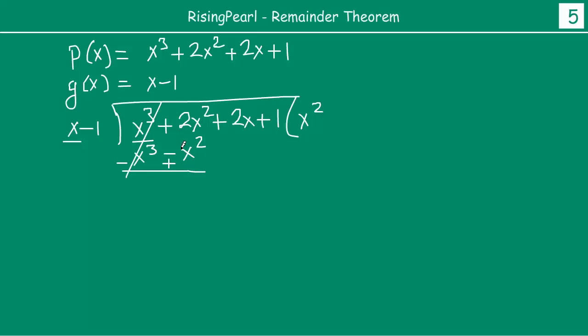Now, 2x² plus x² becomes 3x² plus you get 2x plus 1, right? Now, 3x² when you multiply by both these terms, you get 3x² minus 3x. When you subtract this, this cancels out.